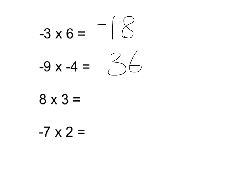8 × 3 is 24, and again because they're both positive numbers, the answer is positive. -7 × 2 is 14, and because the signs are different, one's positive and one's negative, it's -14.